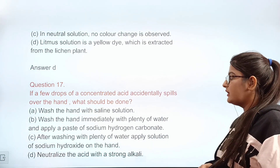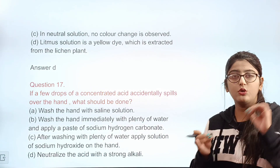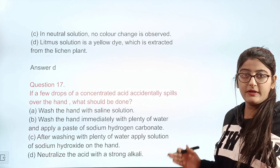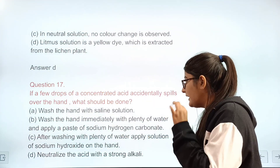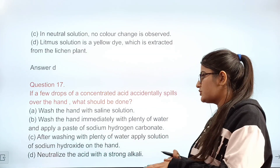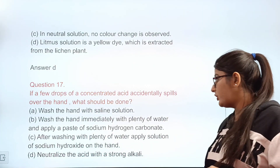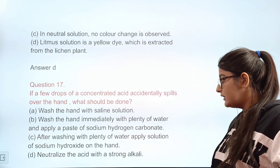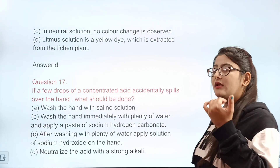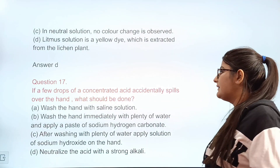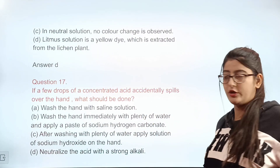Question 17: If a few drops of concentrated acid accidentally spill on the hand, what should be done? Option A: wash hands with saline solution. Option B: wash the hand immediately with plenty of water and apply a paste of sodium hydrogen carbonate. Option C: apply a solution of sodium hydroxide. Option D: neutralize the acid with a strong alkali. Correct answer: B.